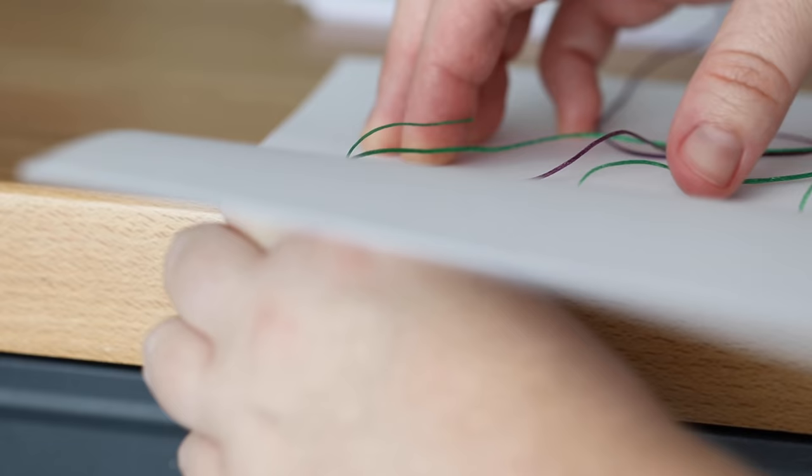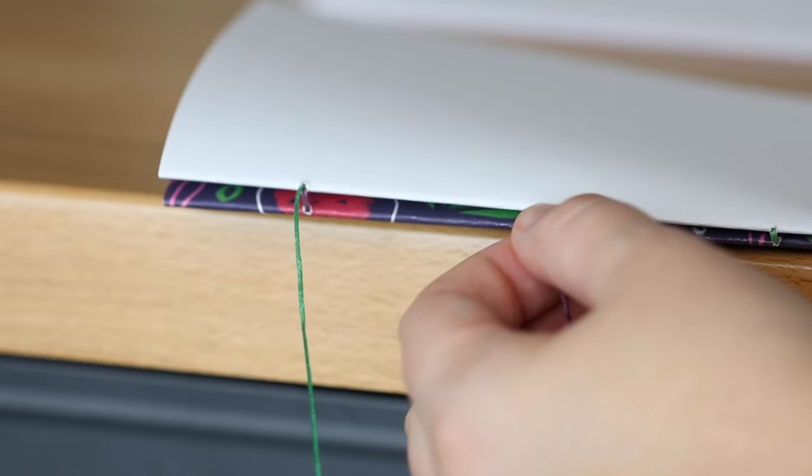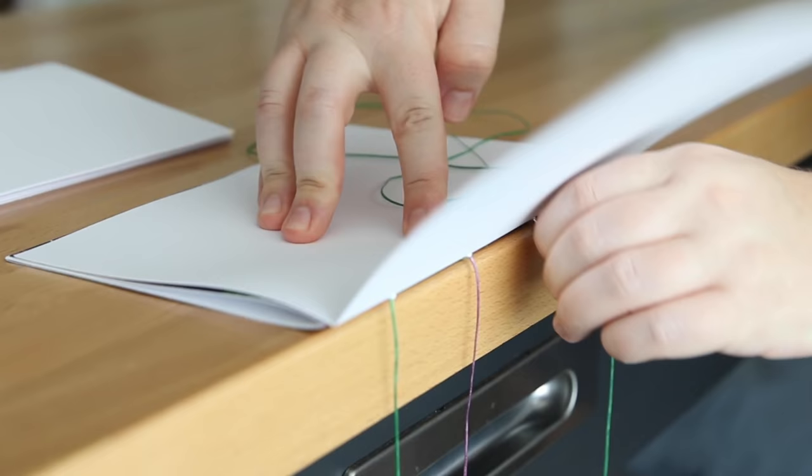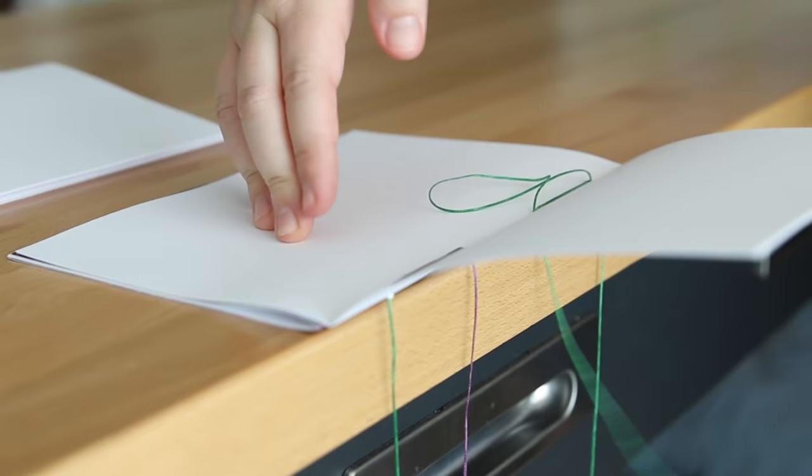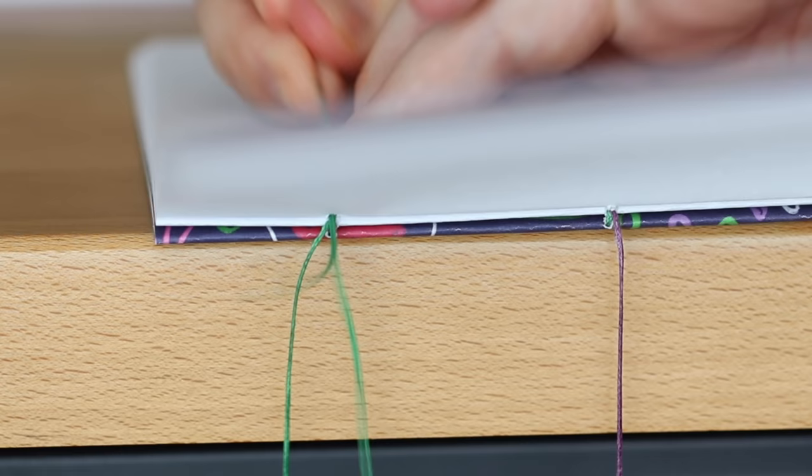Now all of the sections of thread have been pulled in. They're going to alternate. So in this section, the green thread is going to the left and the purple thread is going to the right. Then I'm repeating that on the next section. So both sides of thread switch place. They cross over each other. Then return the needles through a new signature.